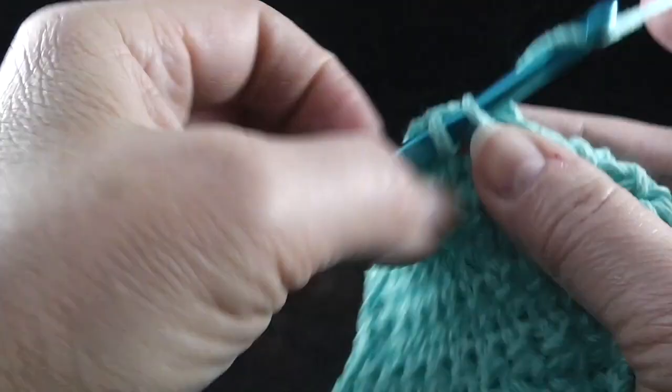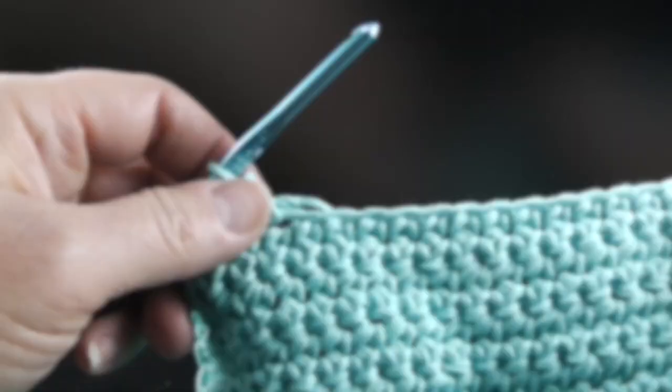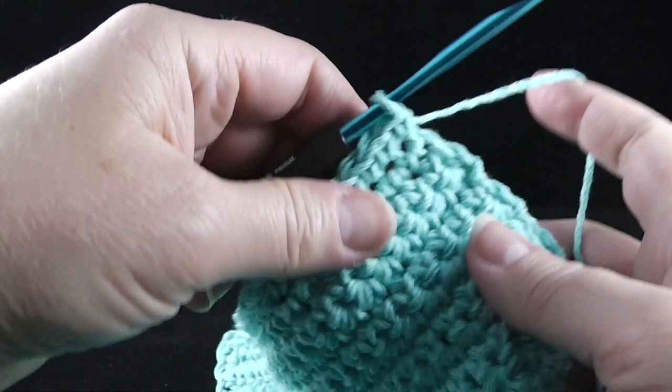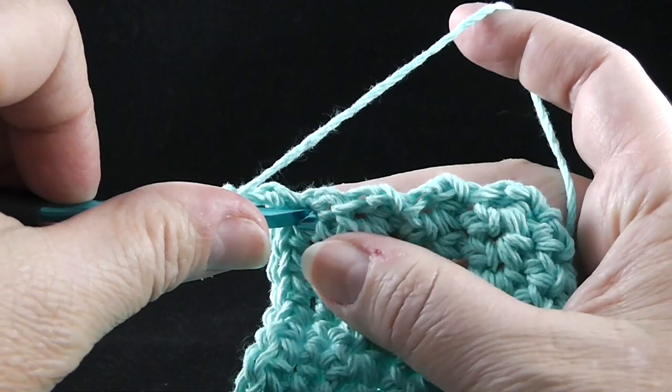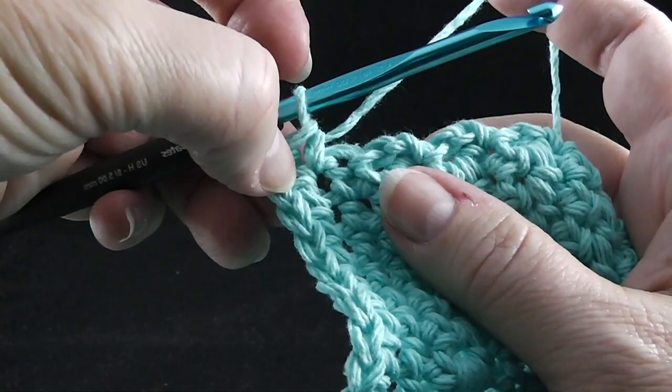Just go ahead and work like this along that foundation round. Go ahead and do that to the corner and then I'll show you how to work up the other side after working along that foundation chain all the way to the corner. Now it's time to chain two, one, two, and we're going to work along the other side, the other row end. So go ahead and put a single crochet in the same place as the last stitch to form that corner and just work along the row ends.